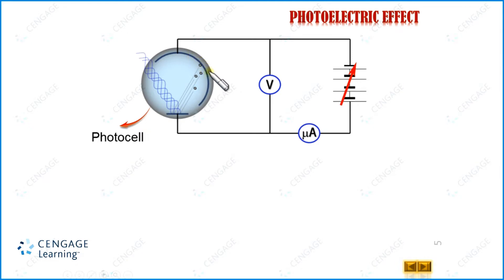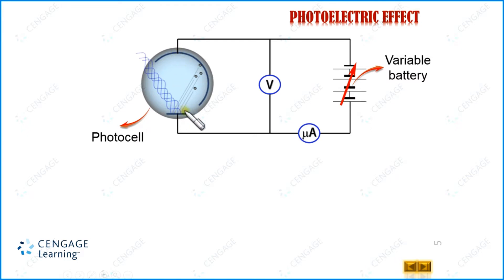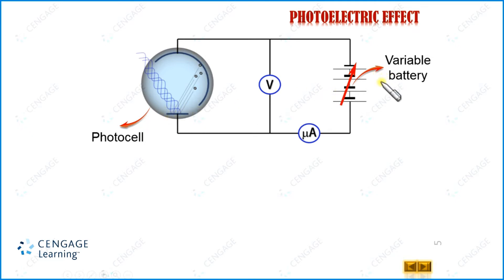This curved plate collects the electrons; that is why it is called the collector plate. You can observe here in this diagram a variable battery. This variable battery is connected across the collector plate and the metal plate. We can change the potential difference in magnitude and sign. The sign of the collector plate potential can be made positive or negative with respect to the metal plate with the help of this variable battery. A microammeter is also connected in the circuit.